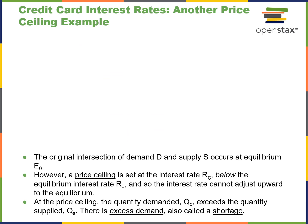The original intersection of supply occurs at equilibrium zero. A price ceiling could be set at interest rate RFC below the equilibrium rate, meaning the interest rate cannot adjust upward to equilibrium. That would create excess demand and a shortage.